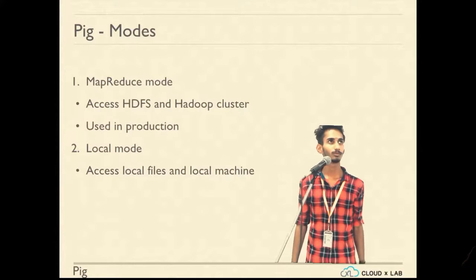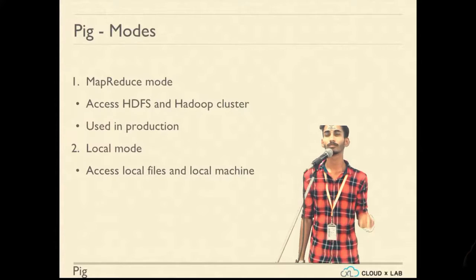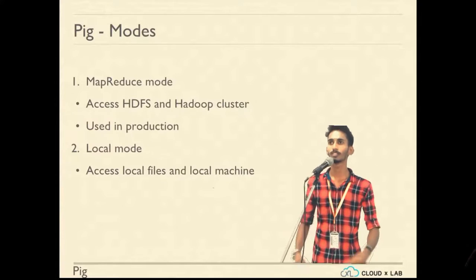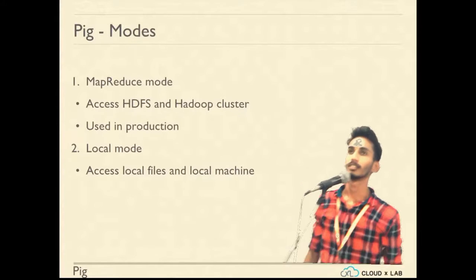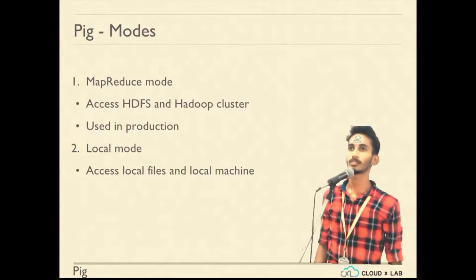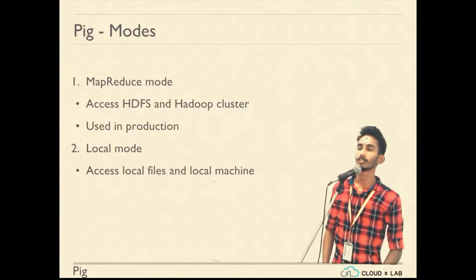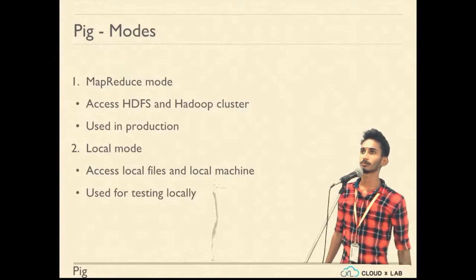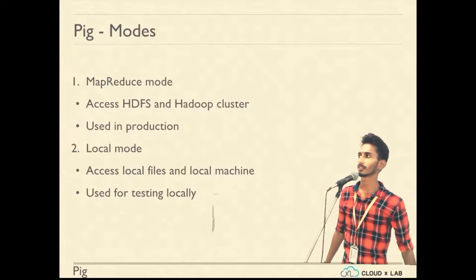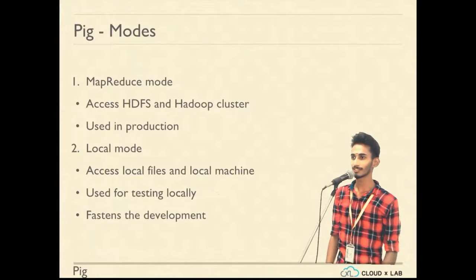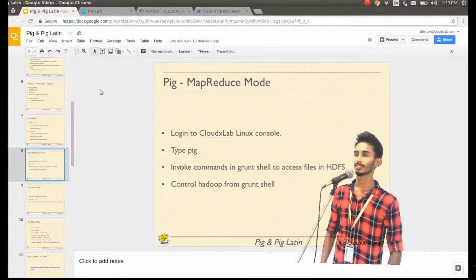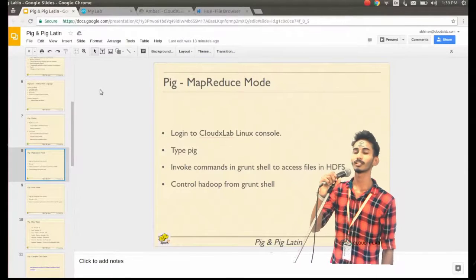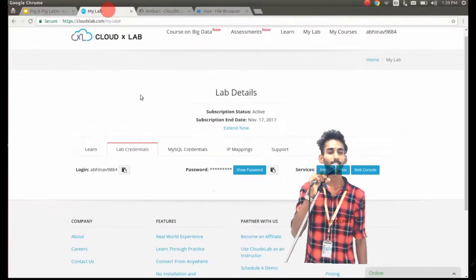In local mode, Pig accesses the local file system and runs on the local machine to produce local mode data. This mode is used for testing locally and speeding up development.